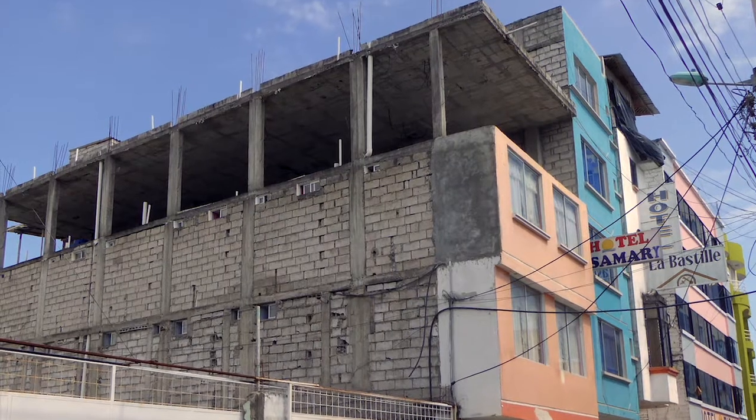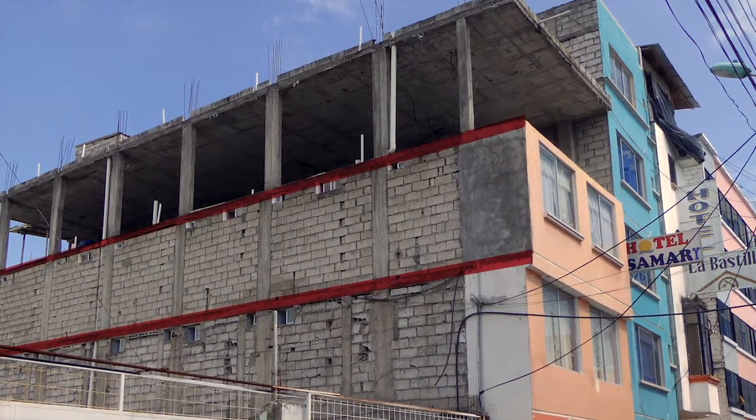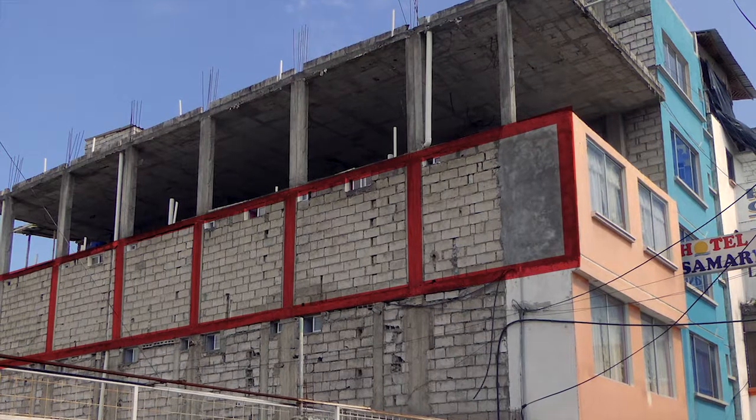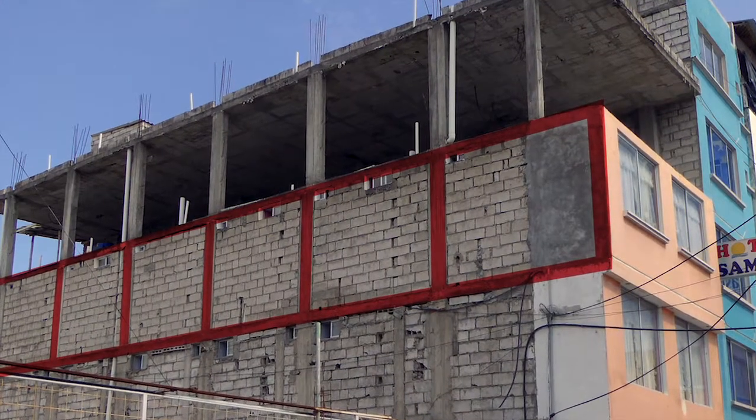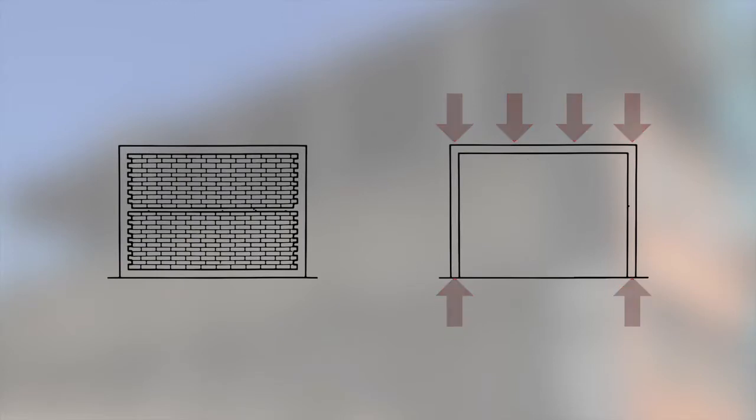In reinforced concrete frame structures, columns and beams are the load-bearing elements. The masonry infill walls are only non-bearing spatial separations. Such a system which bears loads only with the columns and beams is a more flexible system.